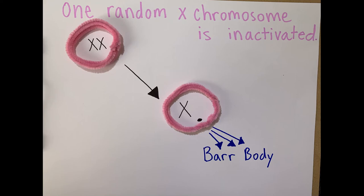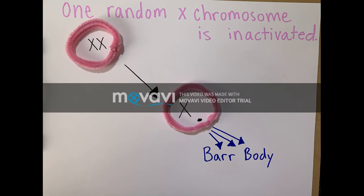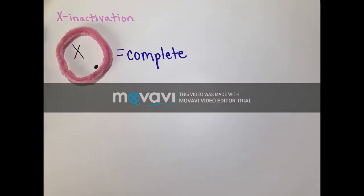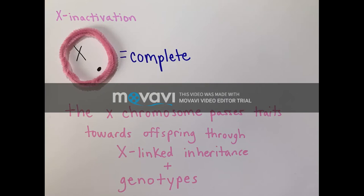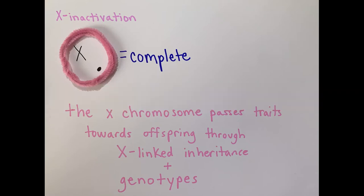As you can see, the activated X chromosome remains normally expressed. After X-inactivation is complete and the bar body is in the periphery, the activated X chromosome can pass traits to offspring through X-linked inheritance and genotypes.